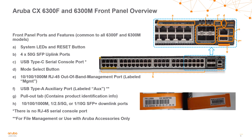Here we have a zoomed-in look at the front face of the 6300F and M series switches. In the upper right, we have the system LEDs and the reset button. All switches have four 50 gig SFP56 uplinks and a USB Type-C serial console port — note there is no RJ45 serial console port. There is a mode button, RJ45 out-of-band management ports, and a USB Type-A port used for file management with Aruba accessories. There is also a luggage tag, which is handy once the switch is racked, letting you pull out switch information easily. The front-facing ports — 1 through 48 on this model — are also visible.